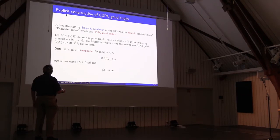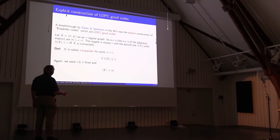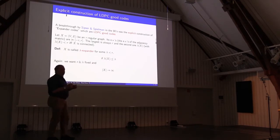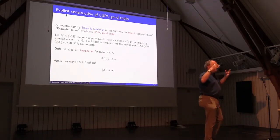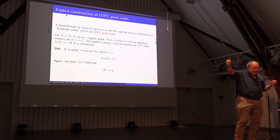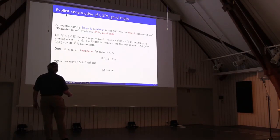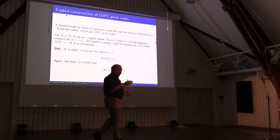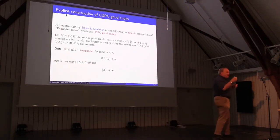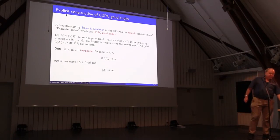There are several equivalent definitions of expanders, but here is one of them. X is called a lambda-expander — lambda being some fixed number less than R — if lambda of X is at most lambda. So we want lambda to be bounded away from R. Again, when I say a graph is an expander, I really care about an infinite family of R-regular graphs for the same R where the size of the graph goes to infinity. A family of expanders means R is fixed, lambda is fixed, and the sizes of the graphs go to infinity. Morally, lambda of X less than R means connected; lambda of X bounded away from R means very connected in a uniform way across the whole family.